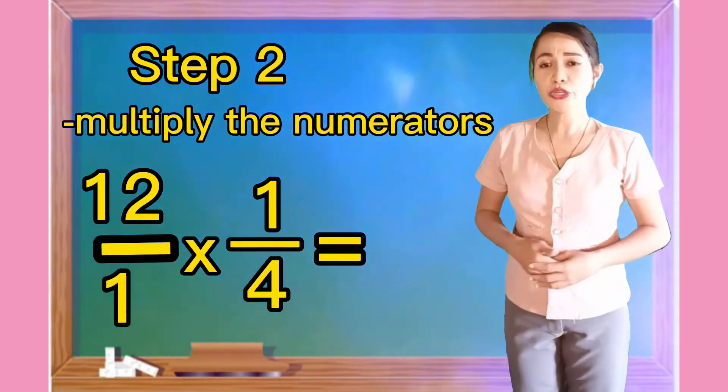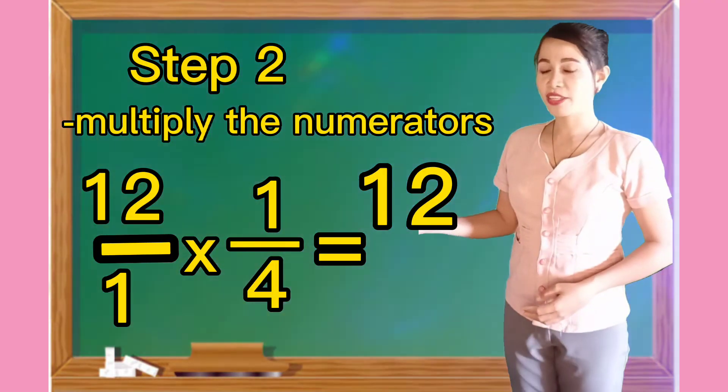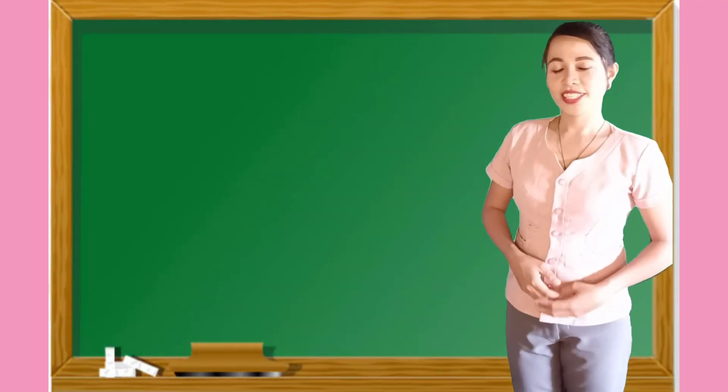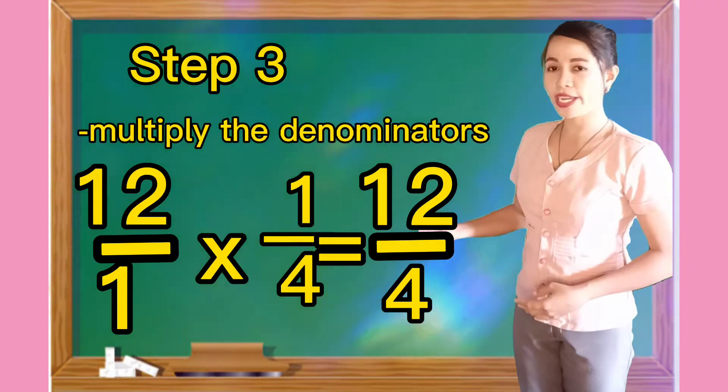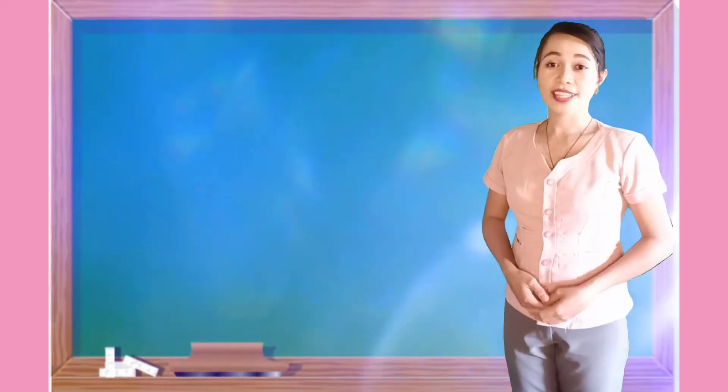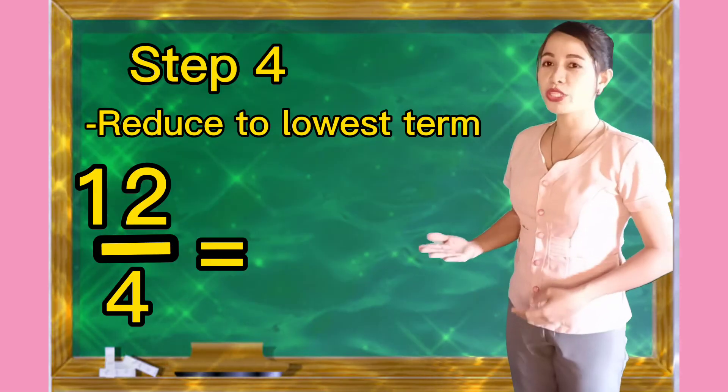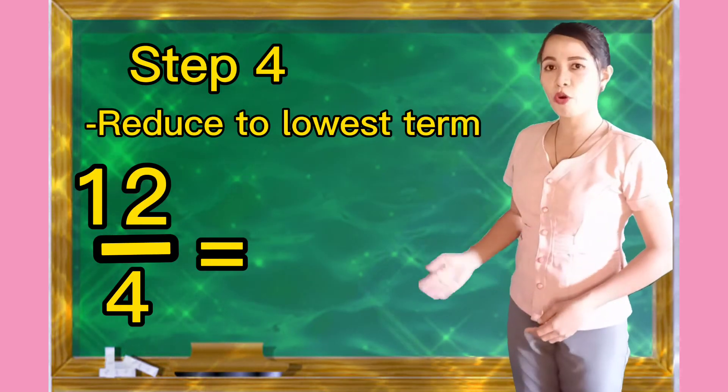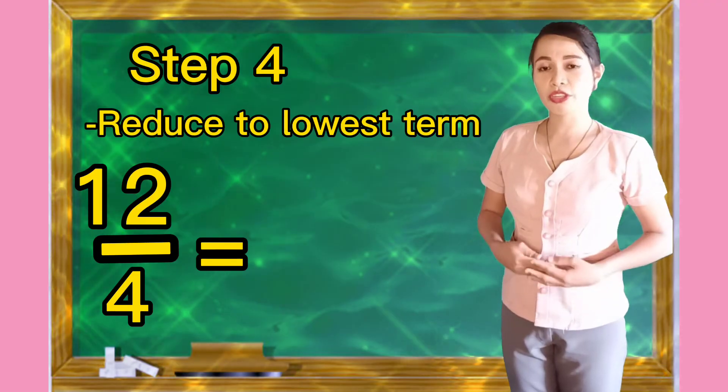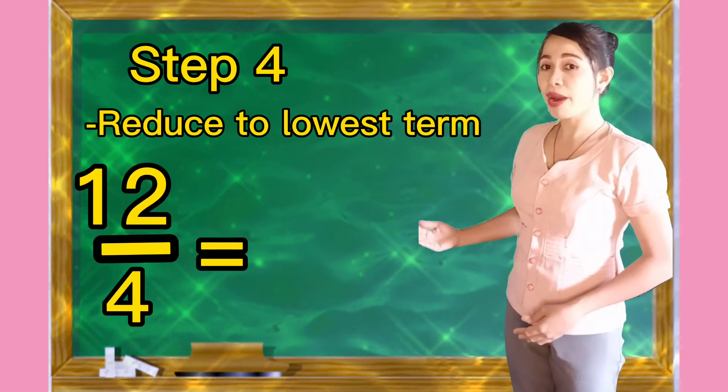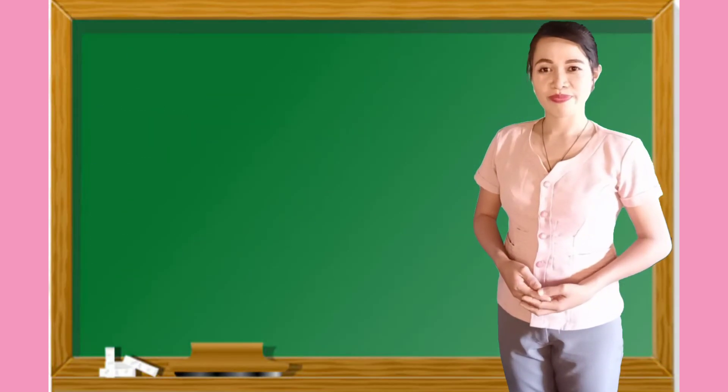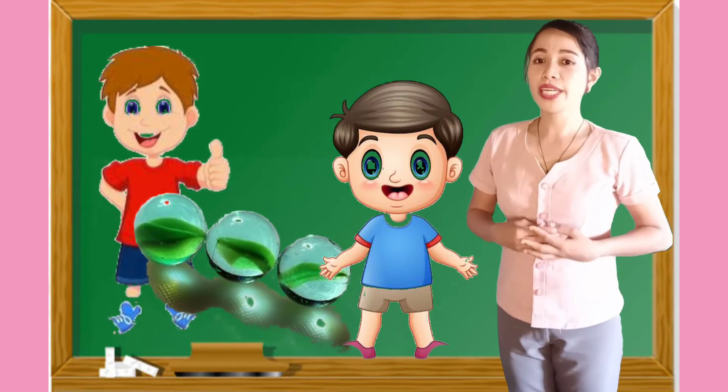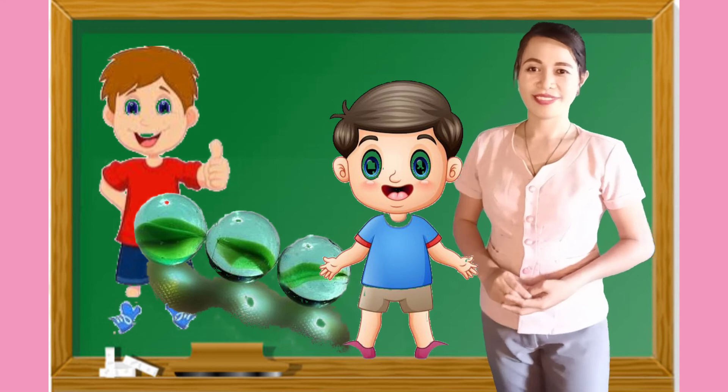Step number two, multiply numerators. Our numerators here is one times twelve. The answer is twelve. Next, step number three, multiply denominators. Our denominators is four and one. The answer is four. And the last step is reduce to lowest term. Since twelve over four is an improper fraction, we need to divide that one. So twelve divided by four is equals to three. So our answer now is the same. So therefore, Marco gave three marbles to Arnold.